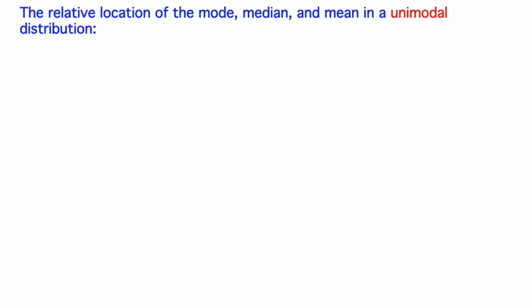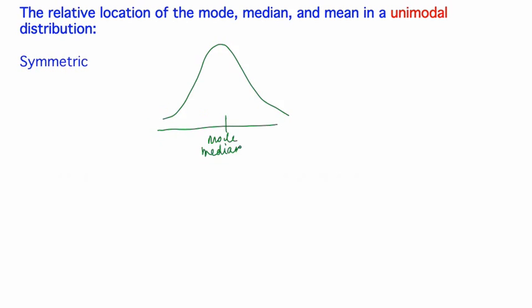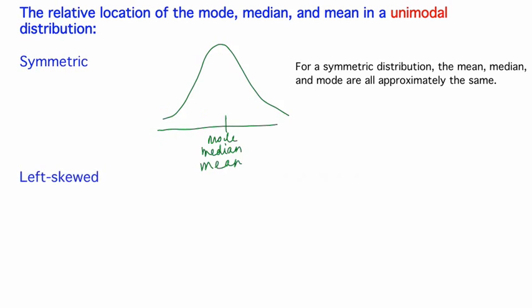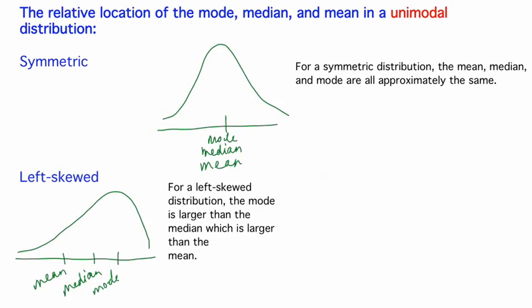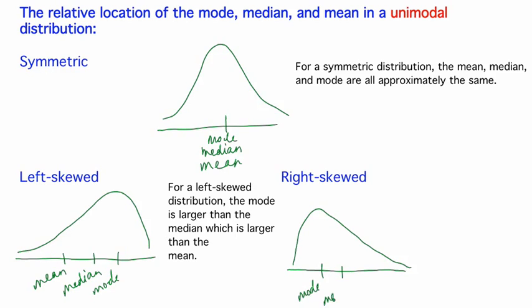The three examples we just looked at all had unimodal distributions, which are by far the most common. To summarize the relative location of the mode, median, and mean in unimodal distributions: if the distribution is symmetric, the mean, median, and mode are all approximately the same. For a left skewed unimodal distribution, the mode is typically larger than the median, which in turn is larger than the mean. And for a right skewed distribution, the mode is typically less than the median, which in turn is less than the mean.